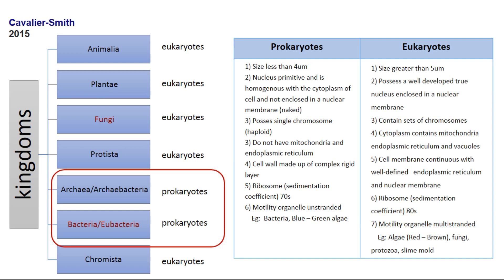What is the difference between prokaryotes and eukaryotes? They differ by the following signs. The first sign is size — prokaryotes have a smaller size than eukaryotes. The second sign is the nucleus — eukaryotes have a true nucleus with a nuclear membrane, while prokaryotes have a primitive nucleus without a nuclear membrane, called a nucleoid. The third sign is the number of chromosomes — prokaryotes have only one chromosome, while eukaryotes have a set.